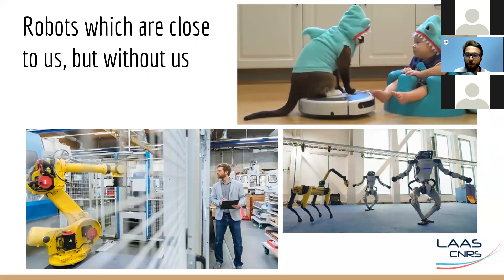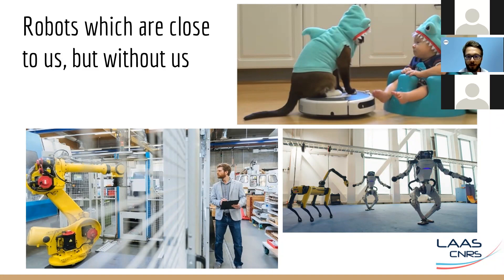We have to speak about Boston Dynamics because they are so famous. Their robots seem to be the most advanced ones, with amazing movement and being able to dance. However, I challenge you to go dancing with them. They execute pre-computed movement and even if they manage their balance, they will do the same movement whether you are there or not. This means they are not designed to be in contact with humans.